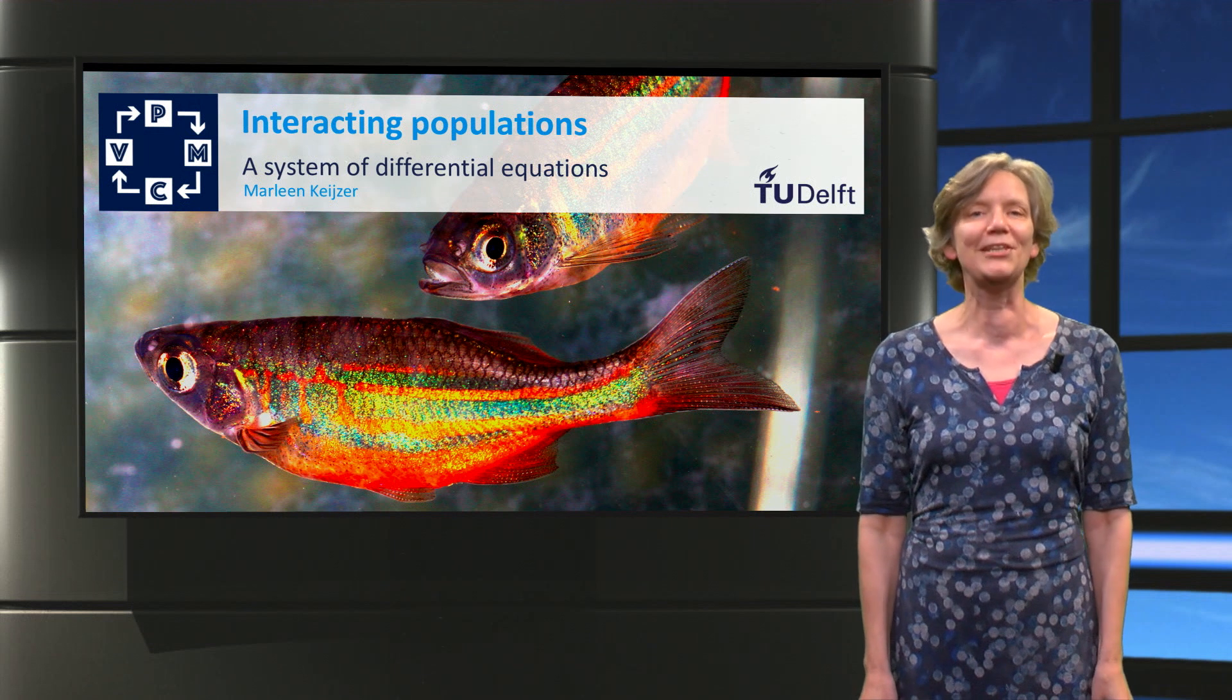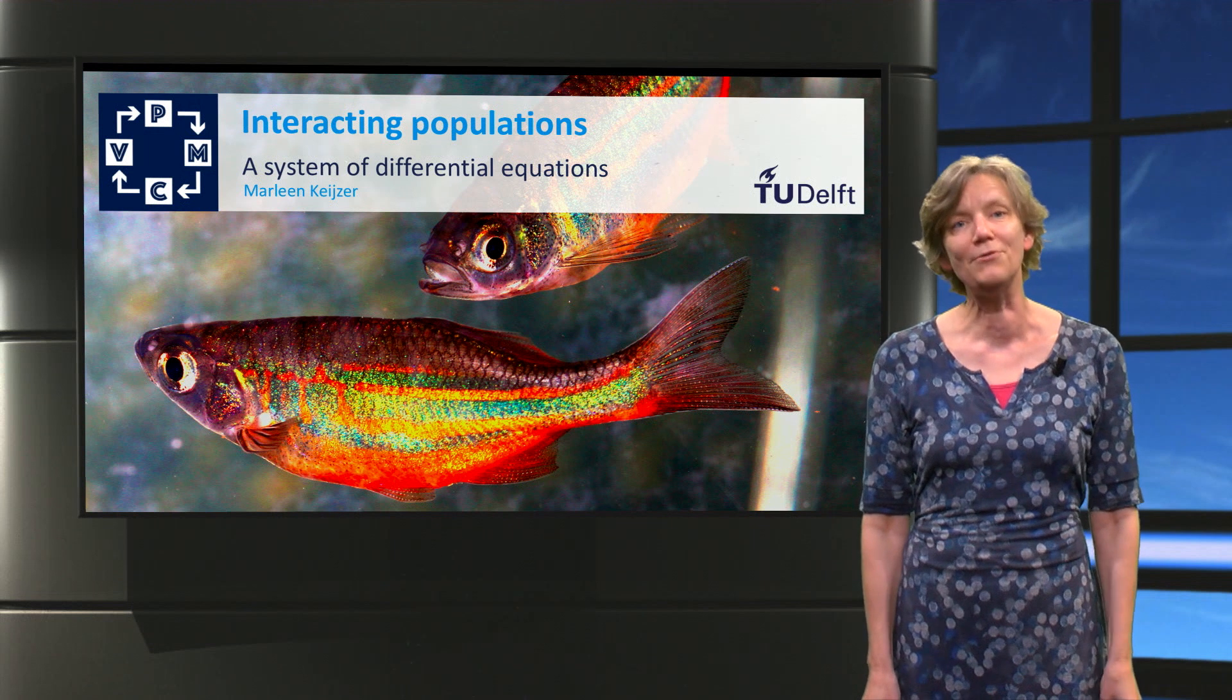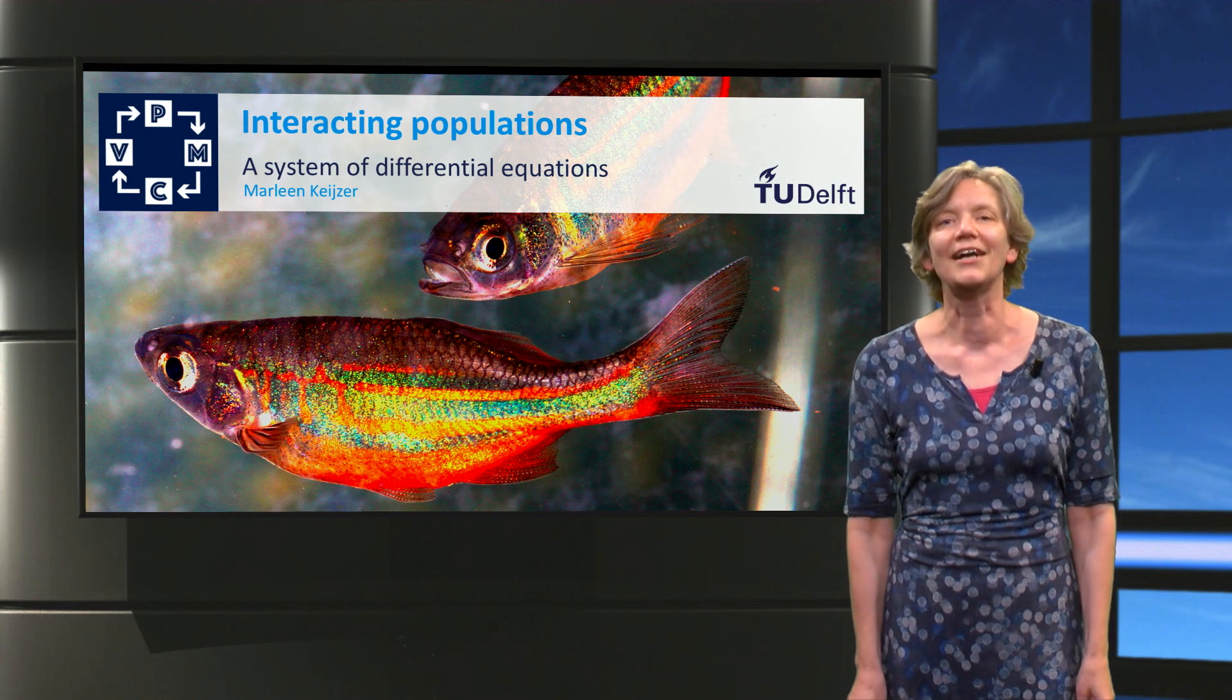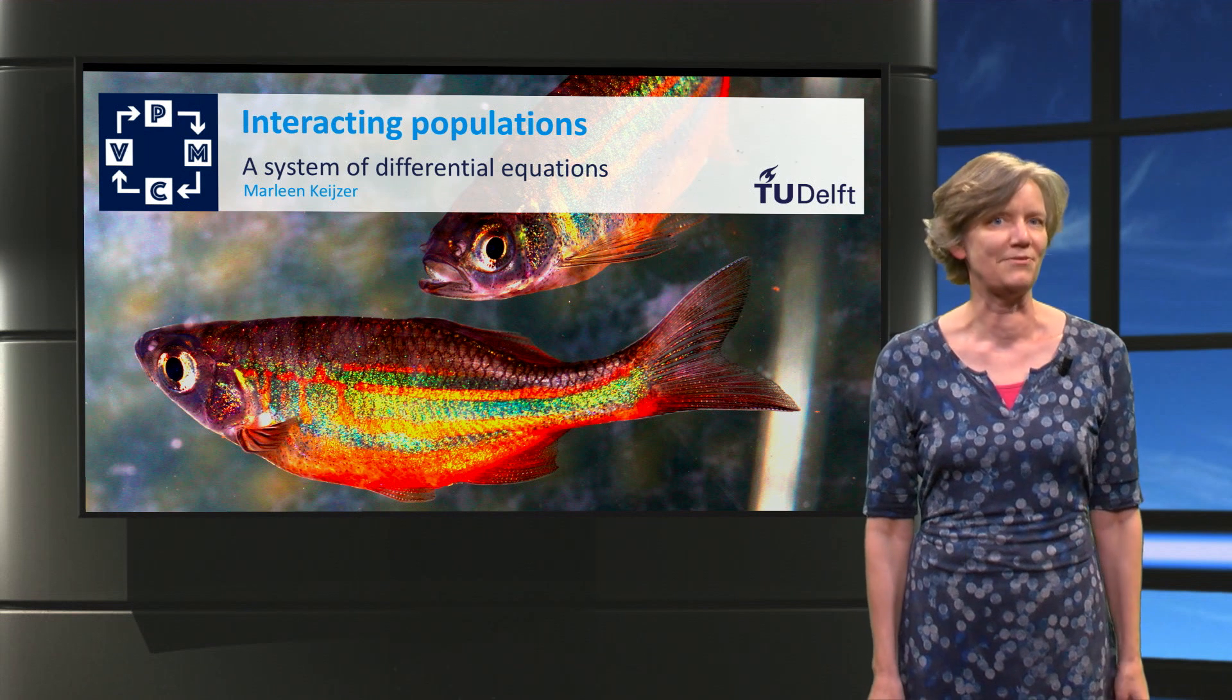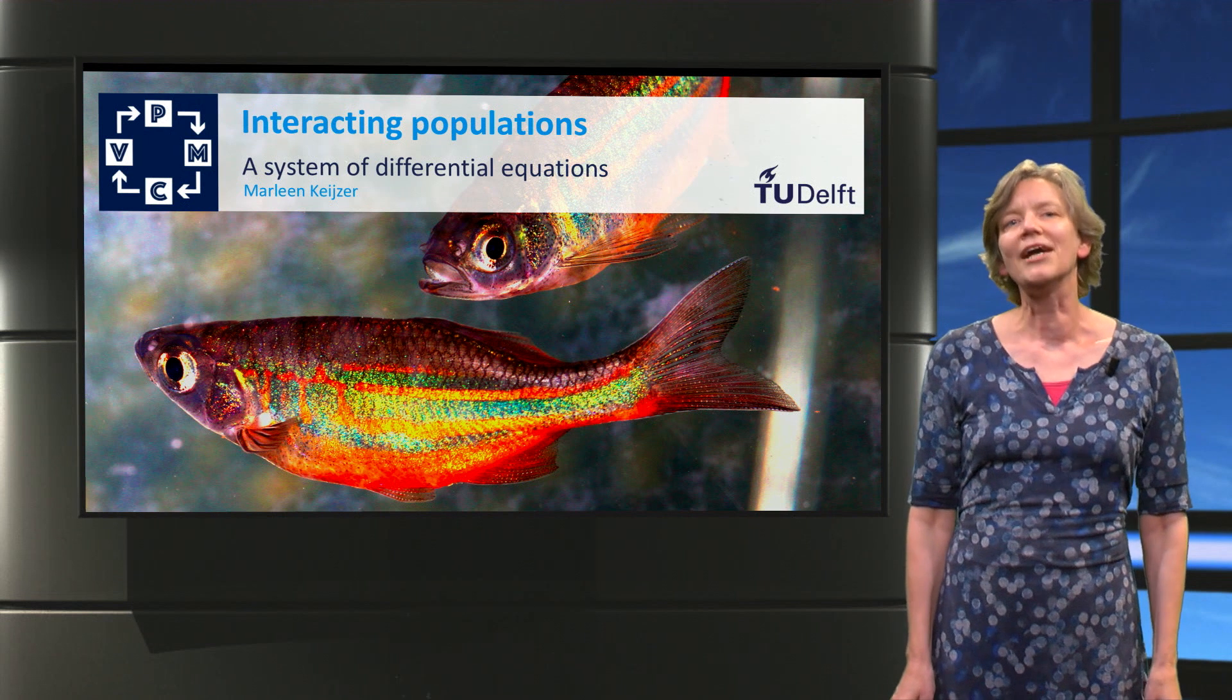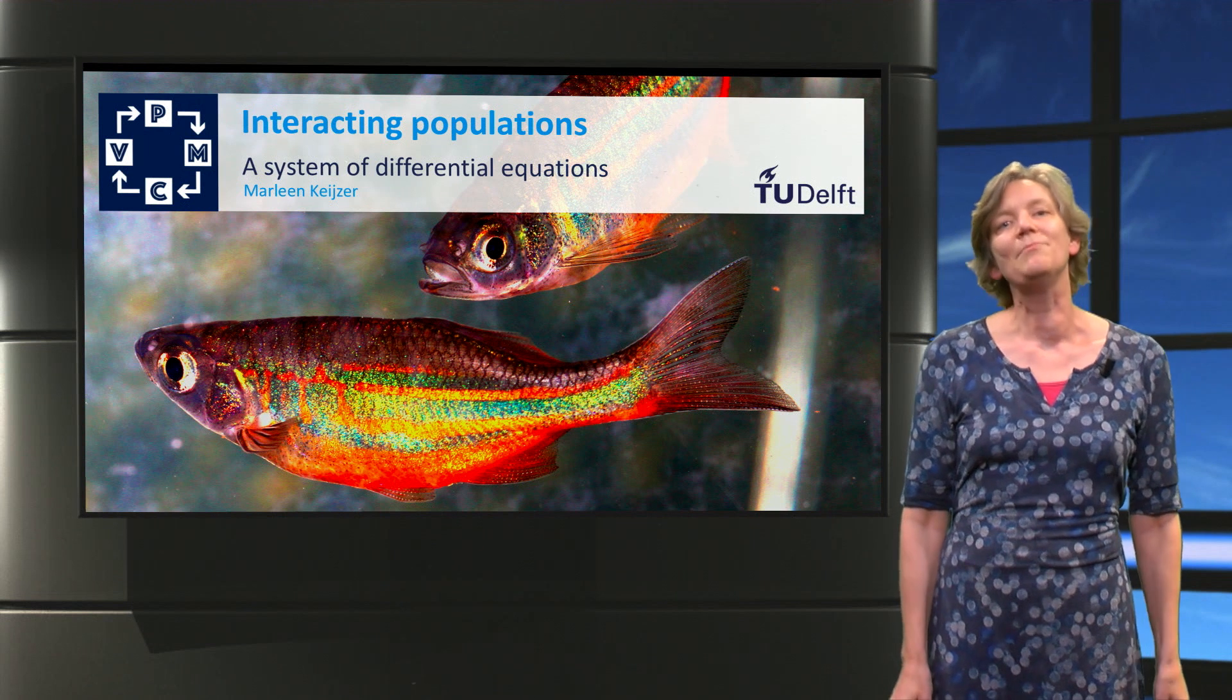A client wants an aquarium with two kinds of fish, rainbow fish and gouramis. The client insists on a kind of gourami that is rather aggressive and sometimes eats a rainbow fish. We are going to construct a model to simulate what happens.